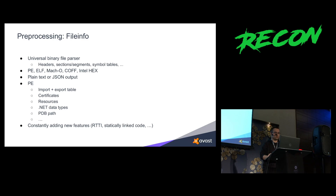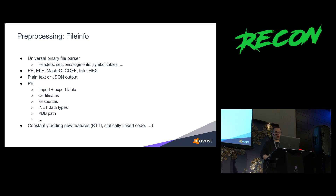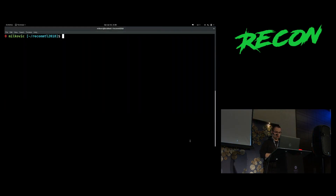Now something about FileInfo. As mentioned, we have this file format library which takes the file and parses whatever it can. FileInfo is just a wrapper around that file format library so we can see what it actually parses. It supports PE, ELF, Mach-O, COFF, and Intel Hex. It can output either plain text — human-readable information — or JSON output which we use for automatic processing. We are constantly trying to add new features and you can use this tool in your toolchain if you want.